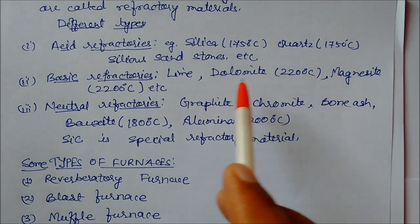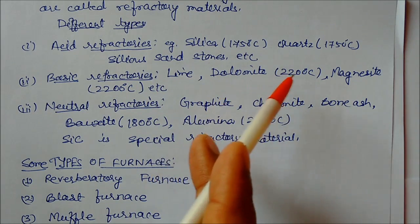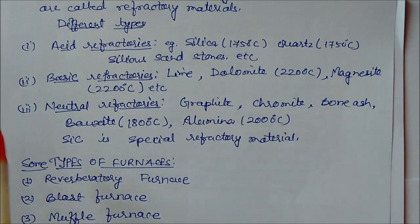Lime, dolomite, magnesite. Their temperature is also given so they can sustain this much temperature. For neutral refractories: graphite, chromite, bone ash, bauxite, alumina, and silicon carbide is a special refractory material. Against every example, temperature has been mentioned. These types of refractories are used in the furnace.